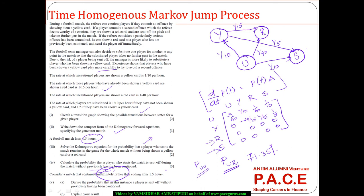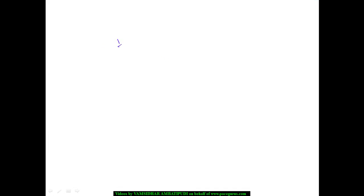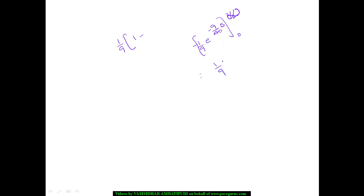Now consider the match ending indefinitely rather than after 1.5 hours. If the match goes on for infinite time, we integrate from 0 to infinity instead of 0 to 3/2. The e^(−9/40 × s) term goes to 0 as s → ∞, leaving −(1/9) × (0 − 1) = 1/9. So if the match goes on for an infinite period, there is a 1/9 ≈ 11.11% chance that a player who starts the match will eventually be sent off without any yellow card.